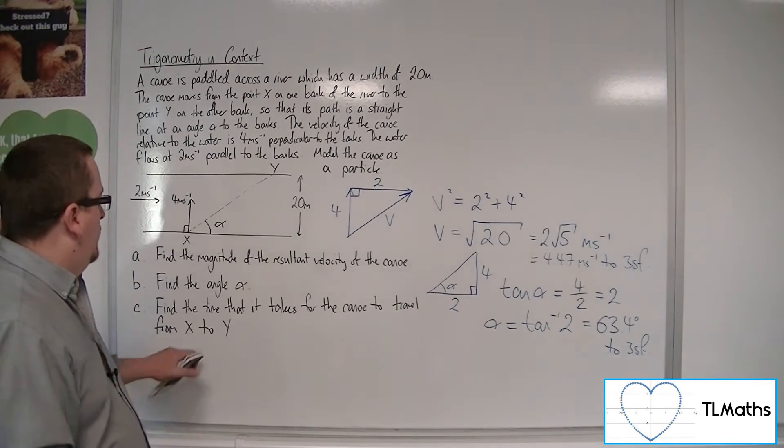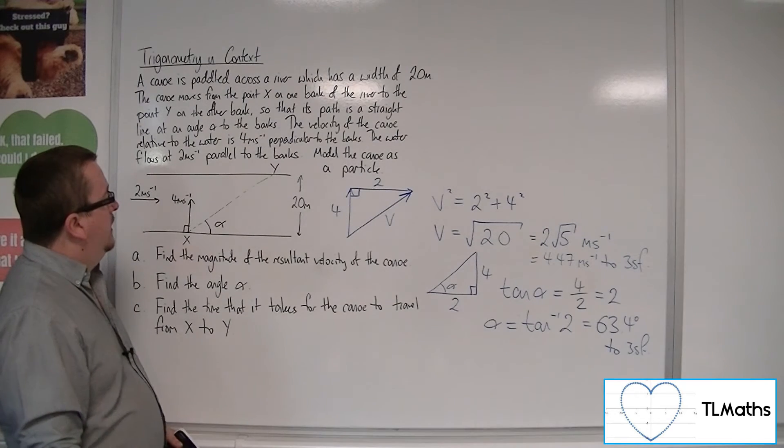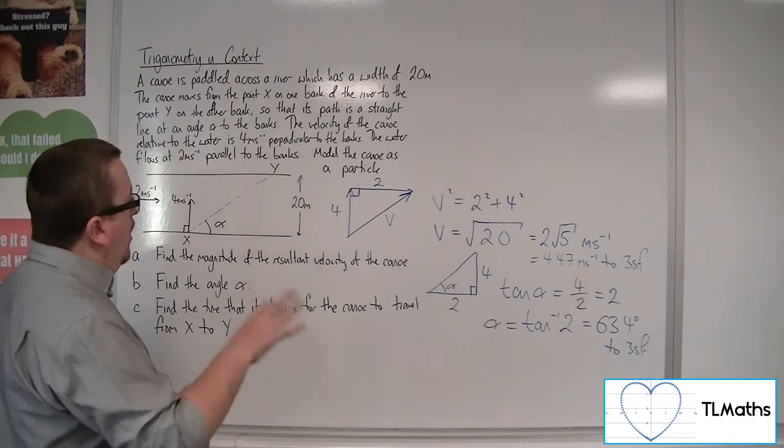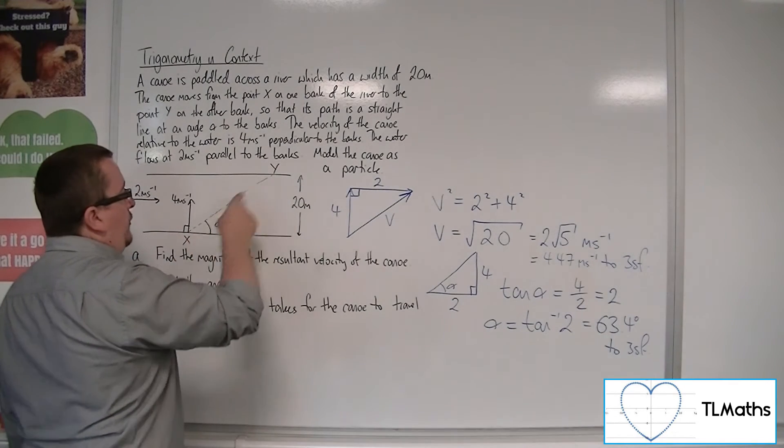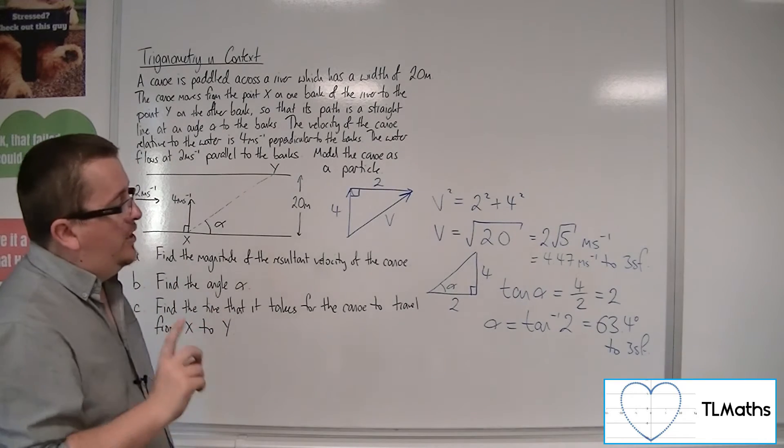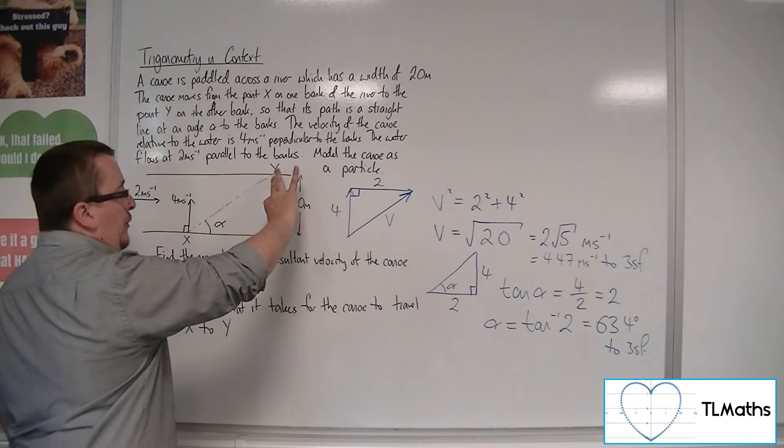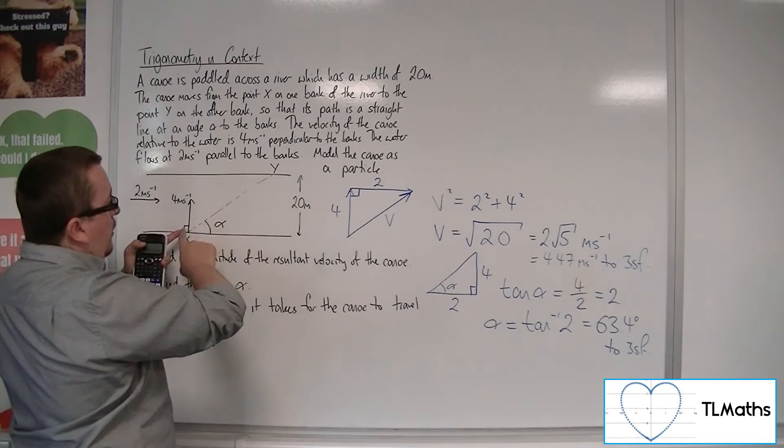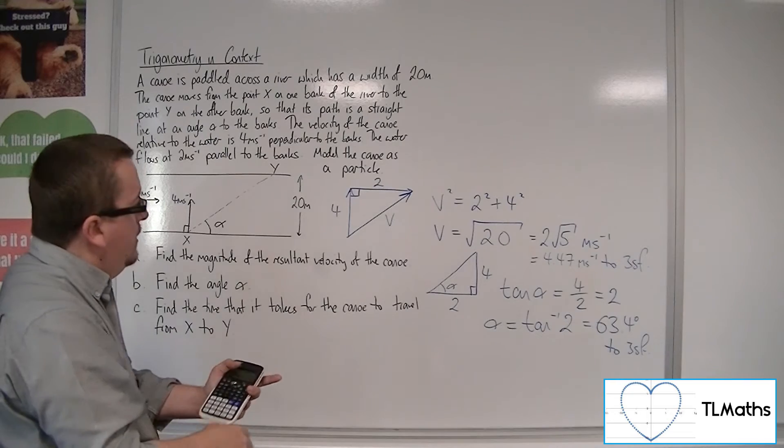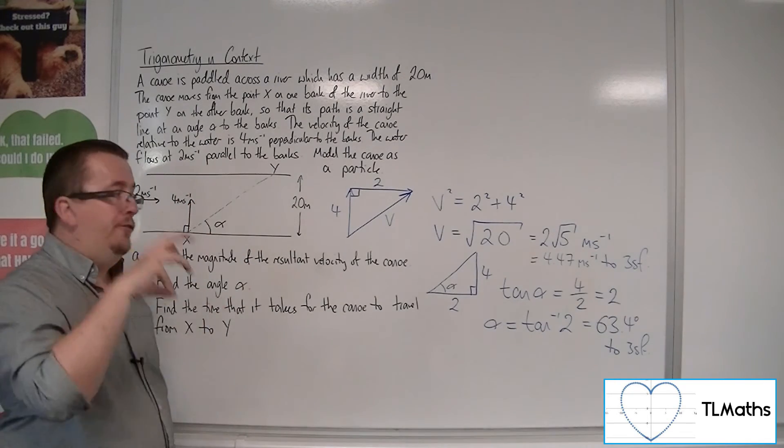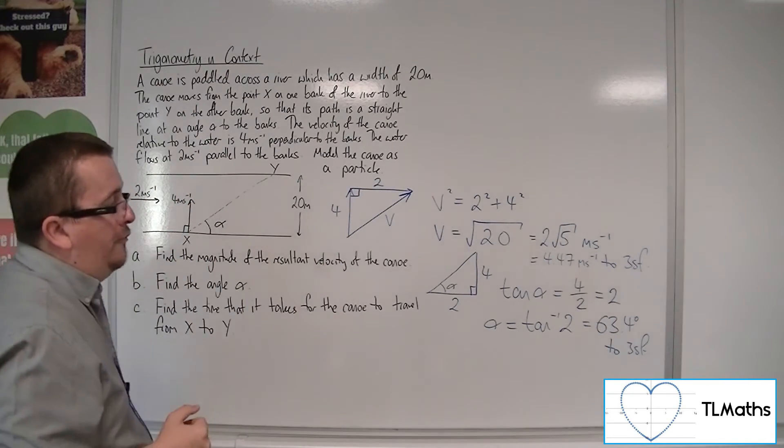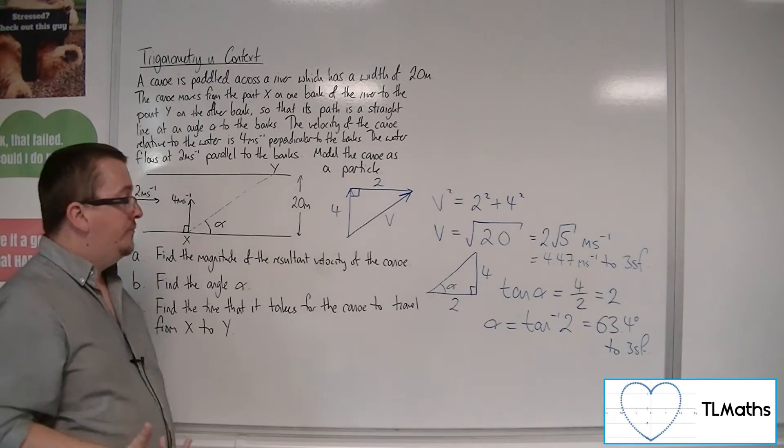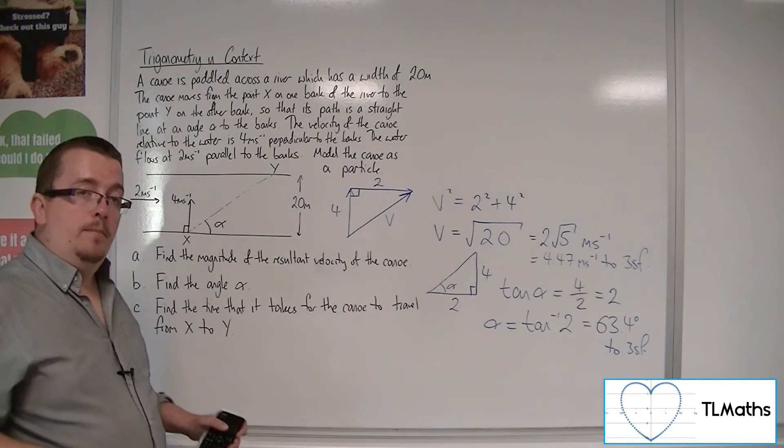Find the time that it takes for the canoe to travel from X to Y. Now, you could, if you wanted to, work out the length from X to Y. Now, you can do that because you now have the angle alpha and also the height of that triangle 20. Because you know the speed that it's going, or the velocity, rather, as it's going from X to Y, you could find out that length, divide it by the 4.47 meters per second, and that will give you how long it would take to get from X to Y. Now, that's a perfectly valid method of doing it.